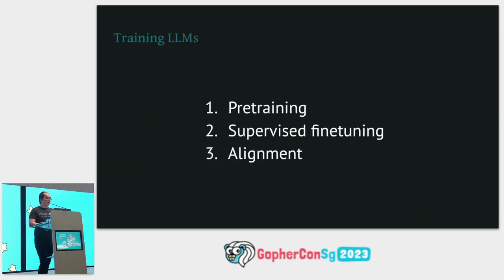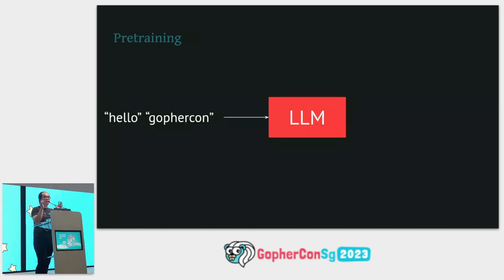Large language models are deep neural networks trained with specialized protocols. In general there are three steps: the pre-training step, supervised fine-tuning, and the alignment step. The pre-training step is most familiar to anyone who has done machine learning — you take a bunch of data, feed it into an algorithm, and in this example we give the LLM the sentence 'Hello, go for GoCon Singapore' and want it to predict the next word: Singapore.